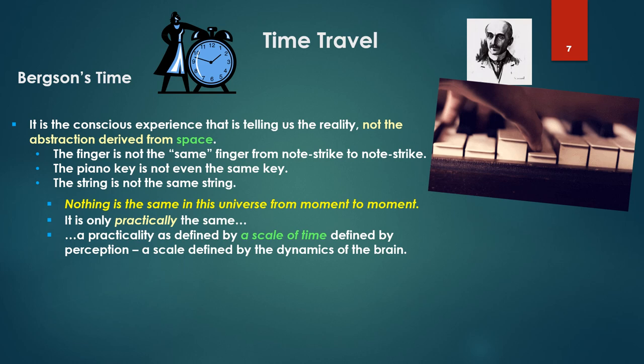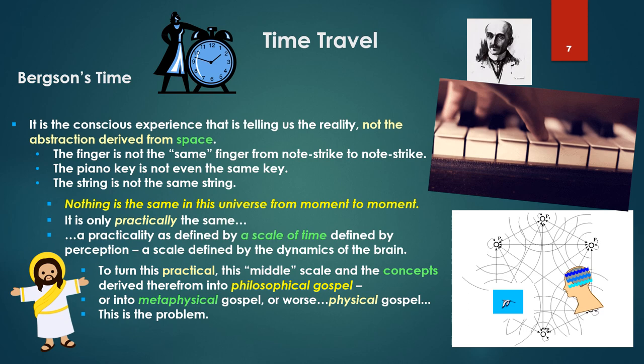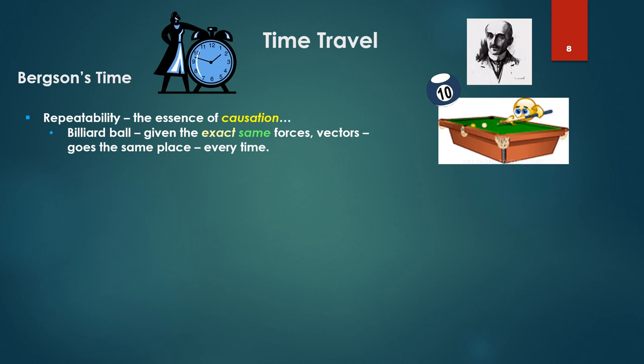Nothing in the universe is the same from moment to moment to moment. It is only practically the same. The practicality is defined by a scale of time, defined by perception, a scale defined by the dynamics of the brain. To turn this practical, this middle scale, and concepts derived therefrom into philosophical gospel, that is, the notion of repeatability and causality, or into metaphysical gospel, or worse, physical gospel, this is the problem. Repeatability is the essence of causation. A billiard ball, given the exact same forces, vectors, goes the same place every time. But how to achieve the exact sameness?